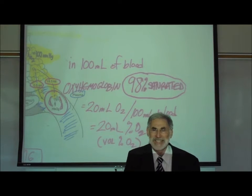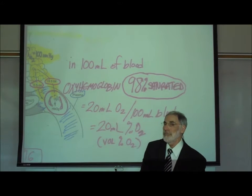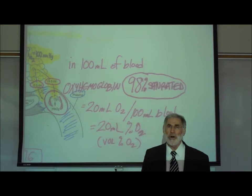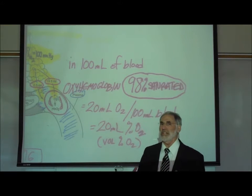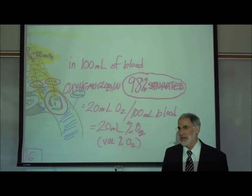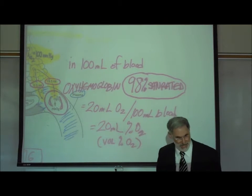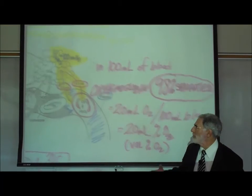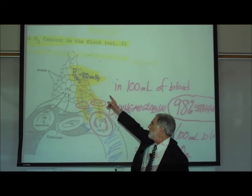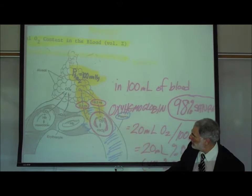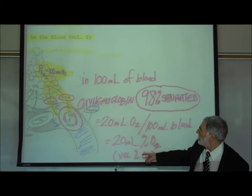What that means is that the hemoglobin in the red blood cells is carrying just about all the oxygen it is capable of carrying or transporting, just by breathing normal air at a normal rate with a normal partial pressure of oxygen of 100 millimeters of mercury or torr.